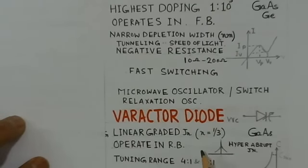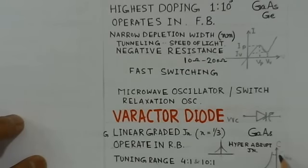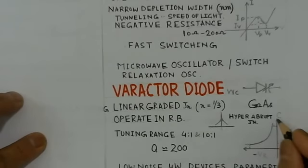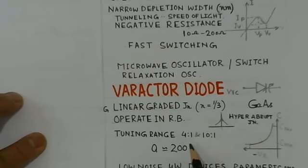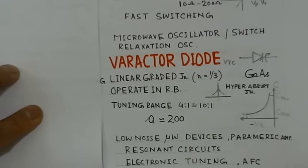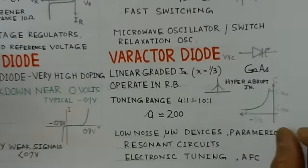The varactor diode, also called varicap or voltage variable capacitor, has a linearly graded junction and is made of gallium arsenide. It is operated in reverse bias, where the capacitance of the reverse-biased junction changes with applied voltage. This variation of capacitance makes it work as a tuning diode. The tuning range is 4-to-1 or 10-to-1 depending on the material, and the quality factor is around 200. Applications include low-noise microwave devices like parametric amplifiers, resonant circuits, electronic tuning, and automatic frequency control.